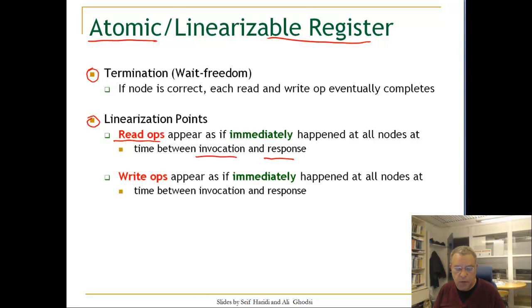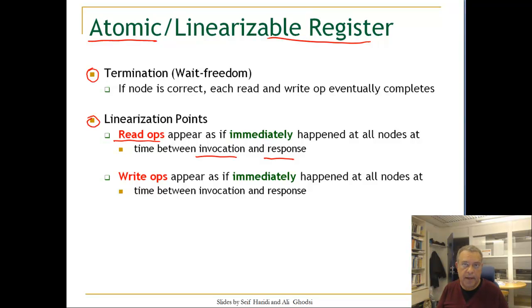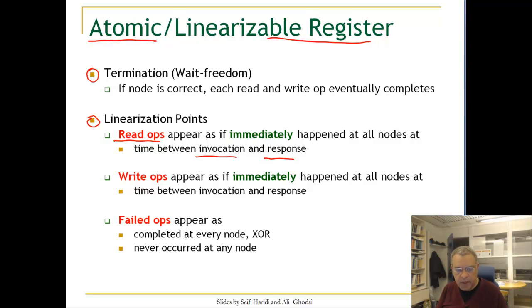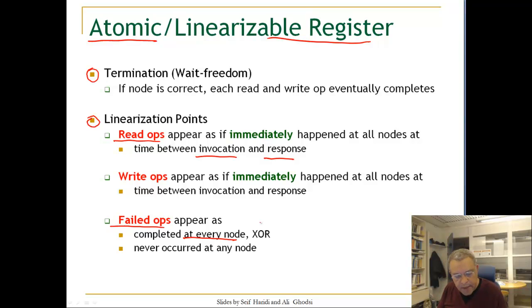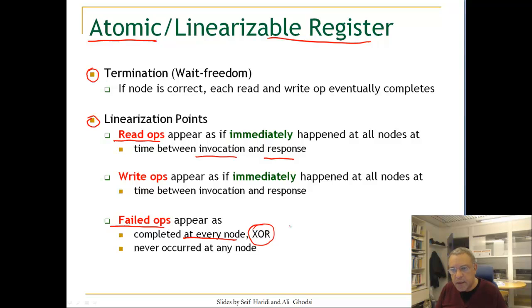A write operation also appears as if it immediately happens at each node at some time between its invocation and its response. So things happen in global time, instantaneously at a certain point. What about failed operations? The word atomic comes from this notion. A failed operation appears as if it has either completed at every node — that is one possibility — or it never occurred at any node. So if a node performs a write and fails, either the effect of the write appears on all nodes or on none of them.